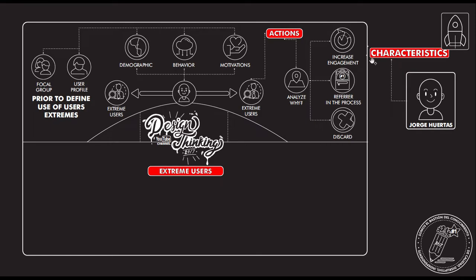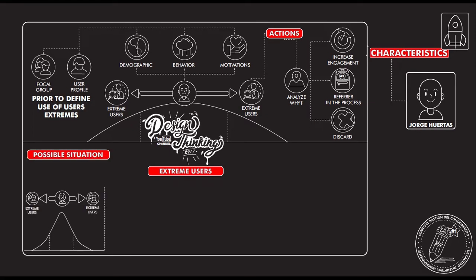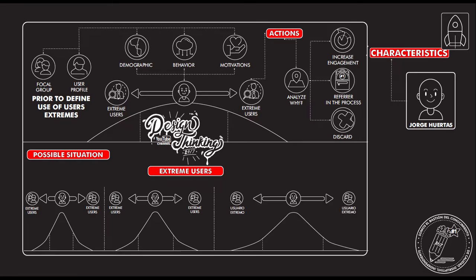The idea is to increase engagement, analyze if it's necessary to refine the process, or discard possible situations you are examining. One possible scenario is that the extreme user starts getting closer to the group — the behavior that was extreme is not that extreme anymore. A second possibility is that the majority of the group starts behaving more like the extreme users, which is a concern. And of course, there's the possibility that the extreme users are actually the majority.